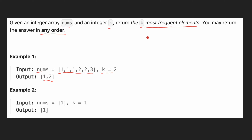To solve this problem, our first step is we are going to create a hash map and calculate how many times each value is repeated. For example, 1 is repeated three times, 2 is repeated twice, and 3 is repeated once. So this is our first step.